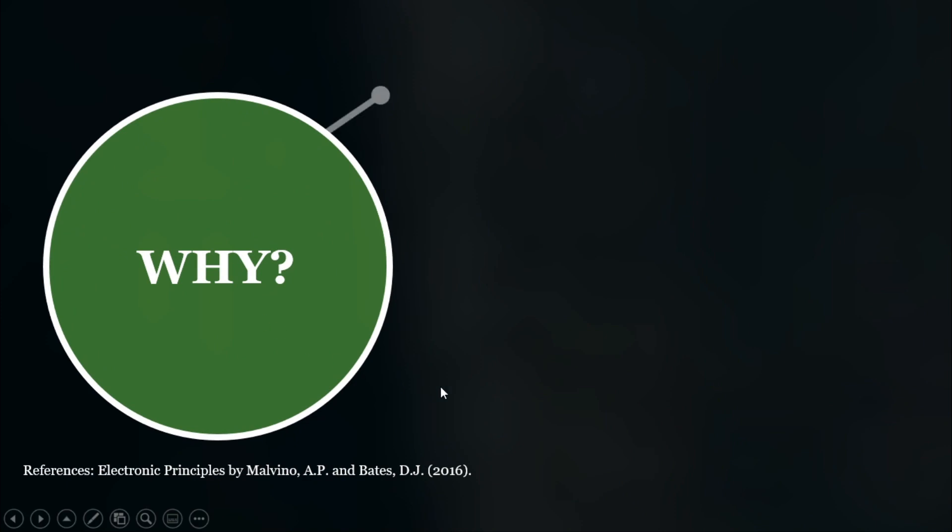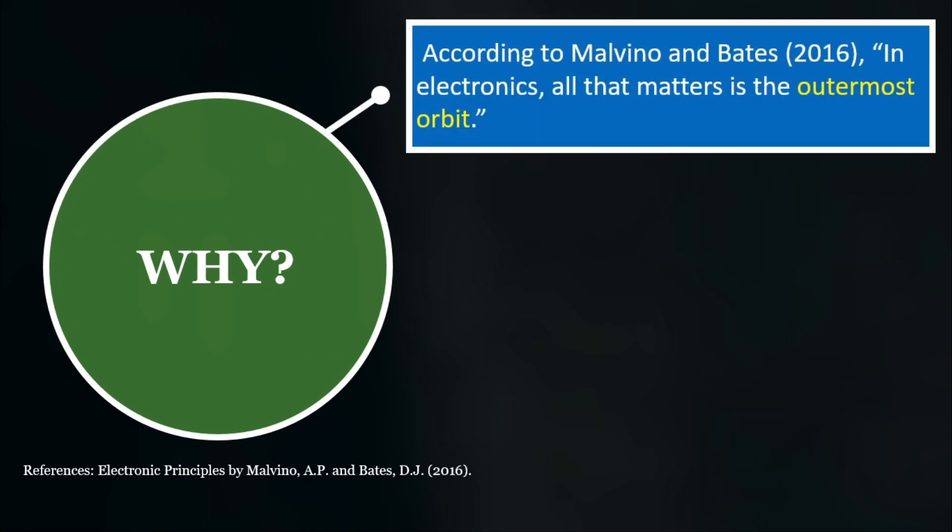According to Malvino and Bates 2016, in electronics, all that matters is the outermost orbit. Since we are studying electronics, it is important that we understand what is meant by the outermost orbit referred by the authors here. To put simply, the outermost orbit is part of the atomic structure, which we will explore later. And understanding the characteristics of the outermost orbit, we will be able to decode the electrical properties of that atom.